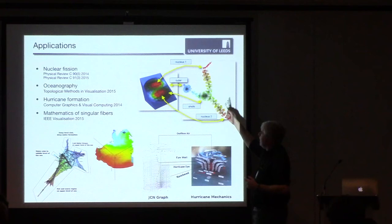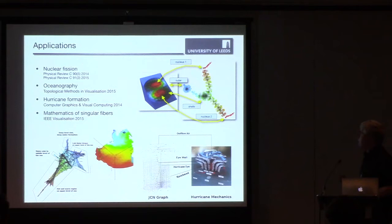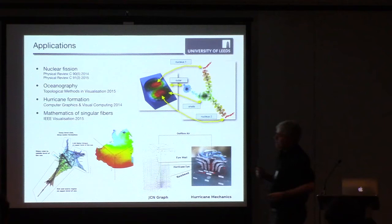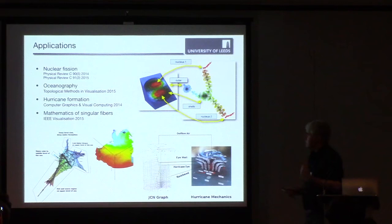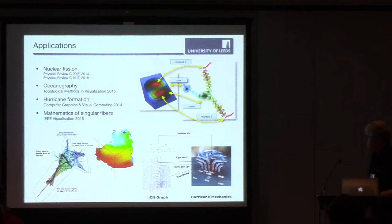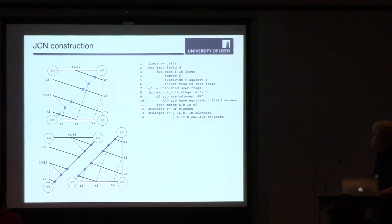So the work we reported last year, we looked at an analysis of data on nuclear fission. That led to two papers in Physical Review. Since then, we've done work with colleagues at Leeds looking at oceanography and using the joint contour net to identify regions of ocean circulation, different kinds of flow. And what we're talking about here today is looking at hurricane simulation and looking at how the JCN can be used to extract features from within a larger-scale model.